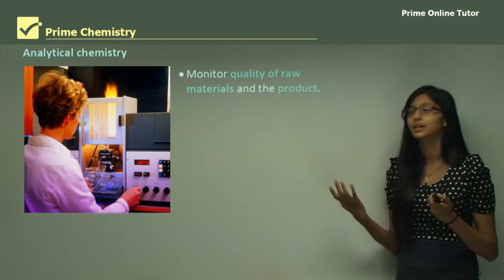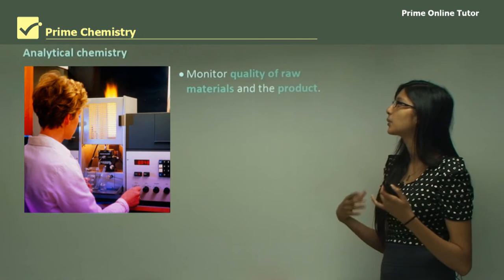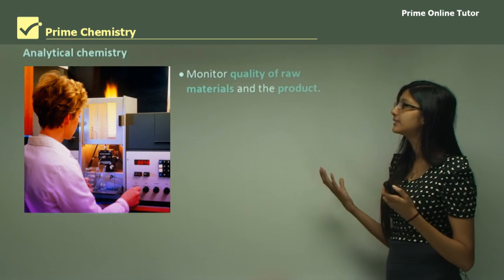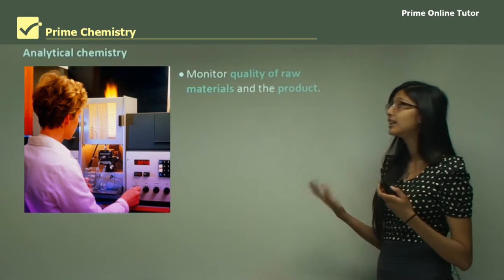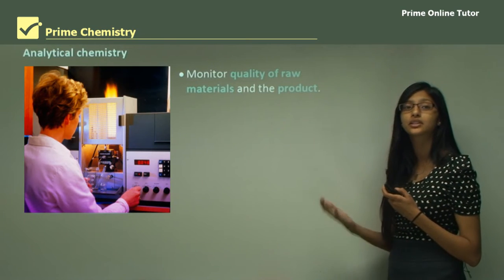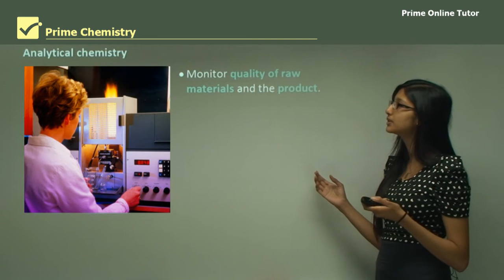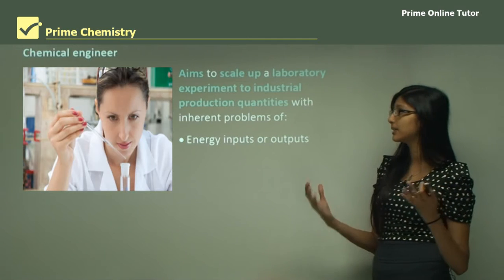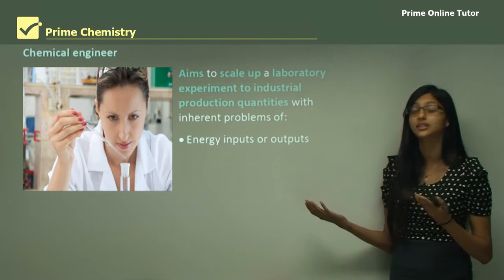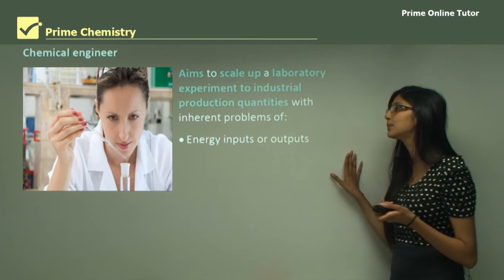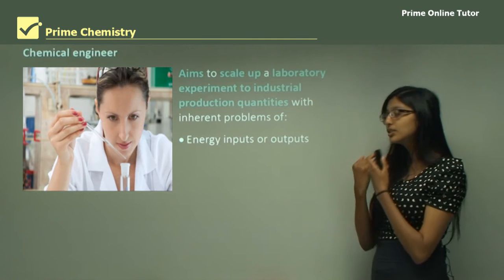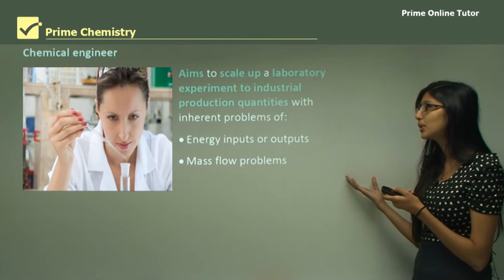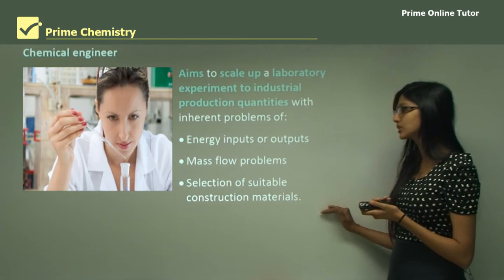An analytical chemist monitors the quality of raw materials and products — they check for impurities in the reactants, which would also affect the product. A chemical engineer aims to scale up a laboratory experiment to industrial production quantities for consumers, dealing with problems of energy inputs and outputs, mass flow, and selection of suitable construction materials.